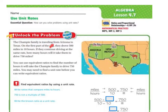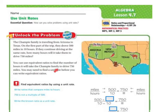The Champel family is traveling from Arizona to Texas. On the first part of the trip, they drove 500 miles in 10 hours. If they continue driving at the same rate, how many hours will it take them to drive 750 miles? You can use an equivalent ratio to find the number of hours. You may need to find a unit rate before writing an equivalent ratio, just like we did yesterday.